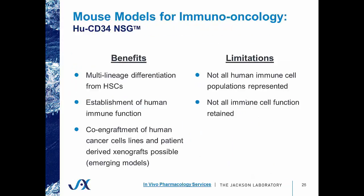That brings me to humanized mice, which are injected with human CD34-positive hematopoietic stem cells. The benefits of using these models are that they support multi-lineage differentiation of immune cell populations from hematopoietic stem cells, they allow for the establishment of human immune cell function within a mouse, and you can co-engraft human cancer cell lines and patient-derived xenografts. Some limitations are that not all human immune cell populations are represented, and not all immune cell function is retained compared to what's seen in human patients.